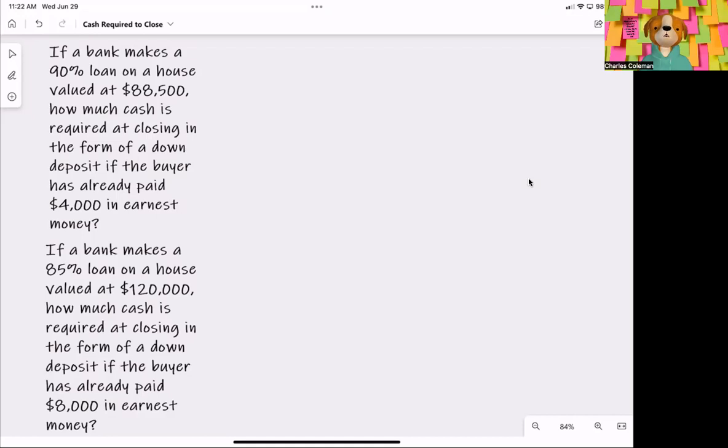This question is essentially asking us what is 10% of $88,500 if the bank is bringing the other 90%. So we're going to take $88,500 and multiply that by 10%, because the bank is bringing the other 90%. That gives us $8,850.